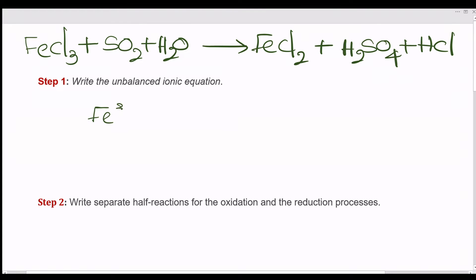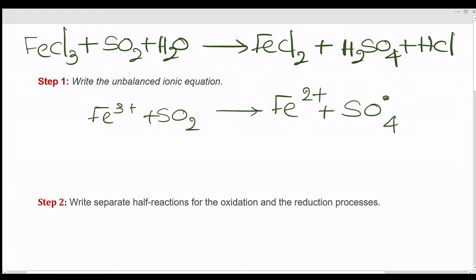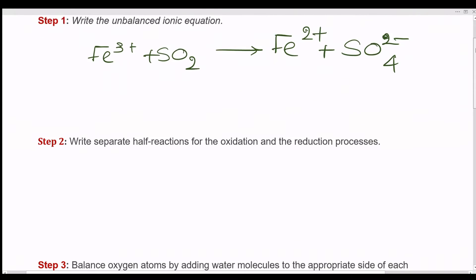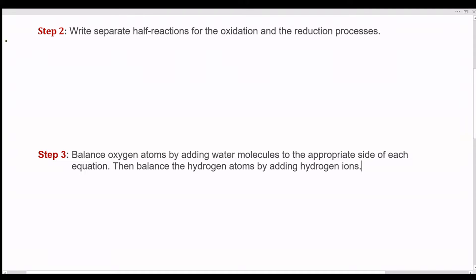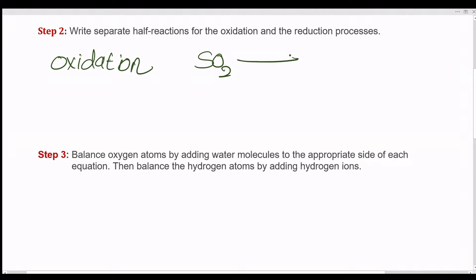Step 1: Write the unbalanced ionic equation. Step 2: Write separate half reactions for the oxidation and the reduction processes.